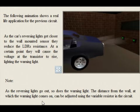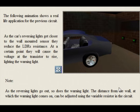The distance from the wall at which the warning light comes on can be adjusted using the variable resistor in the circuit.